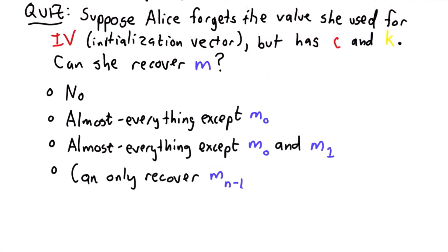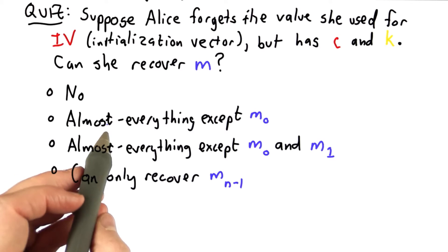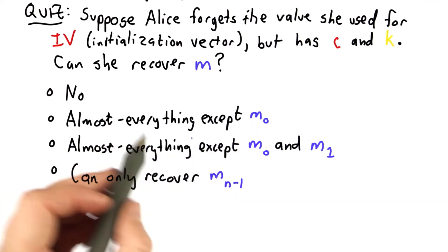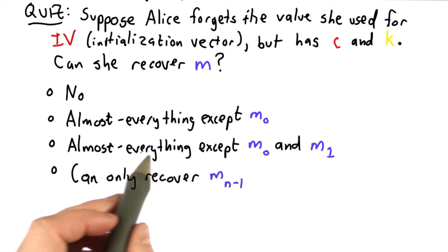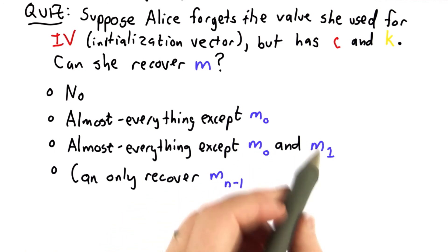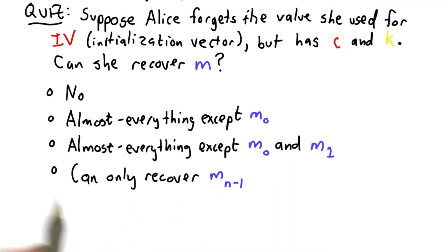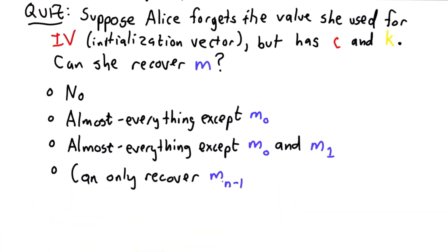So the answers are: no, she can't recover any of m; almost — she can recover all of m except for the very first block; almost — she can recover all of m except for the first and the second block; or she can only recover the very last block of m.